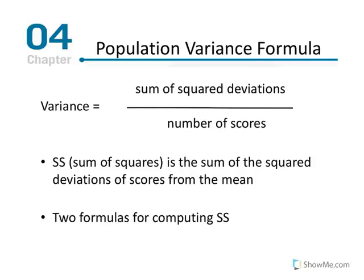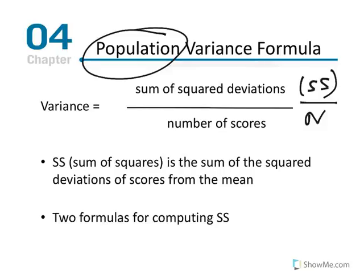The population variance formula: variance equals SS over N, where SS is the sum of squared deviations and N is the population size. The notation for population variance is lowercase Greek sigma squared. SS — sum of squares — is the sum of squared deviations from the mean: sigma of (x minus mu) squared. There are two formulas for computing SS: the definitional and the computational. The definitional formula teaches the concept clearly — find the deviation for each score (x minus mu), square each deviation, and sum the squared deviations.